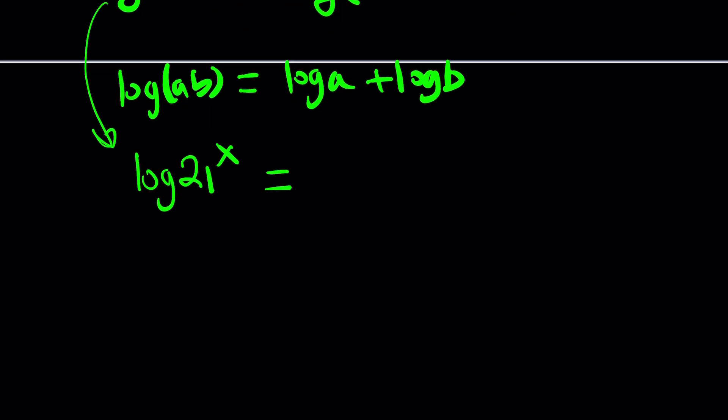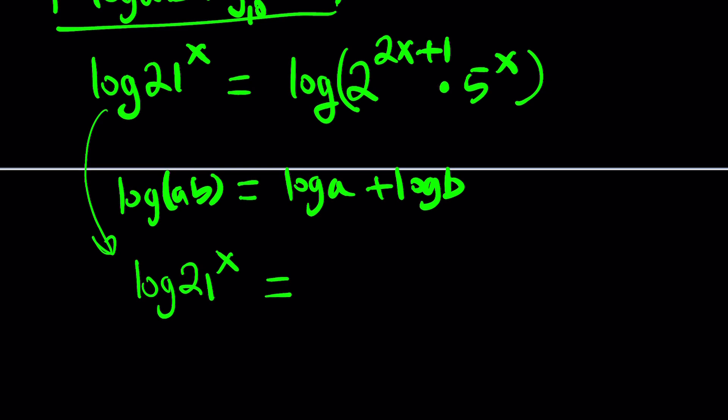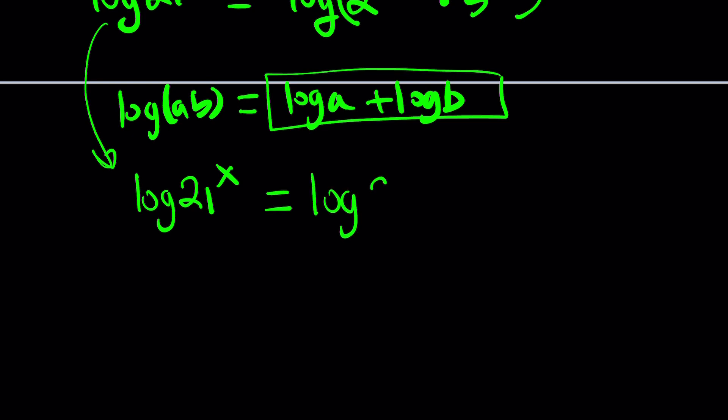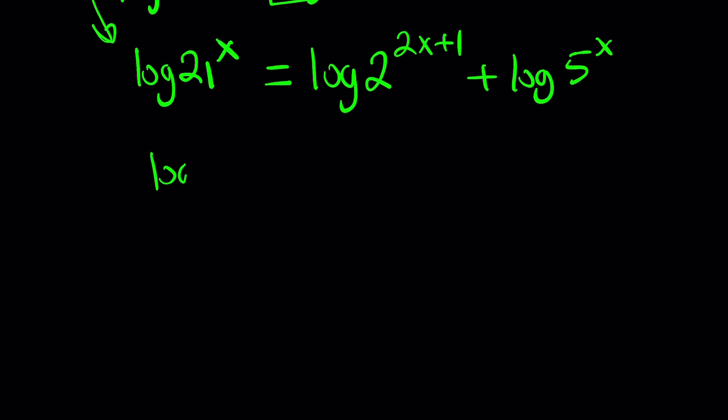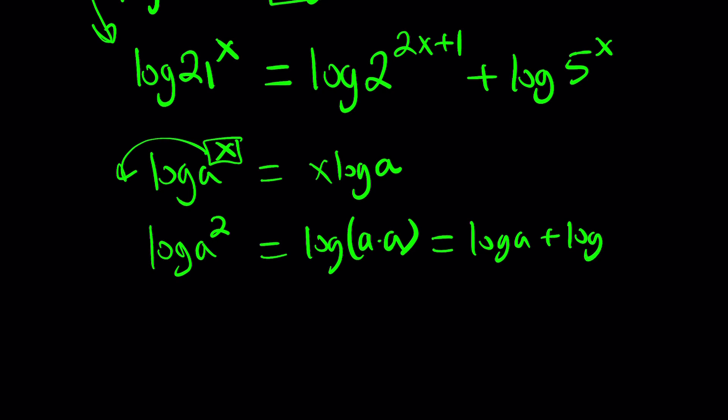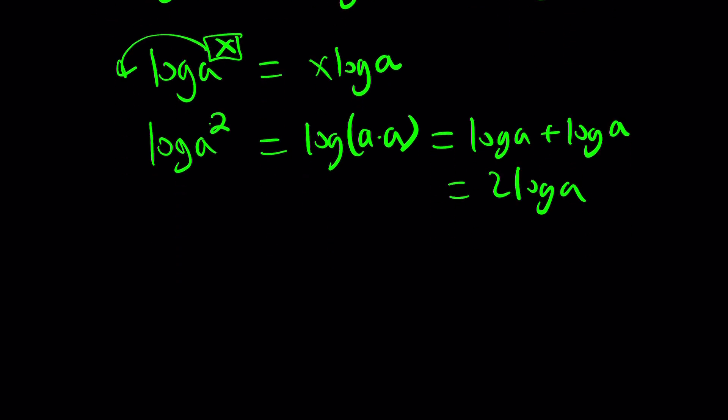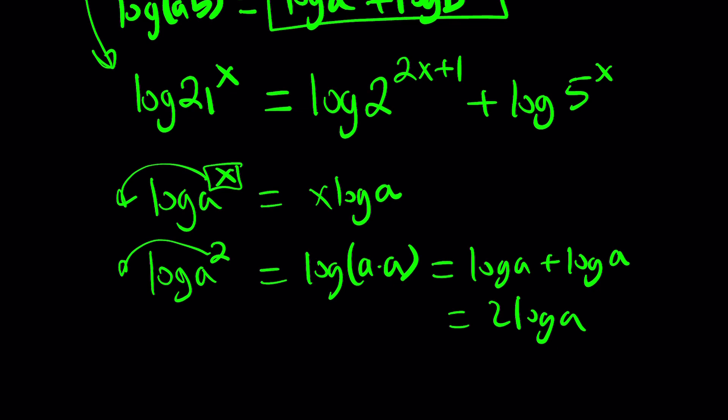So that's how we can deal with the products. Log 21 to the power X. And if you have the log of a product like here, we can split it up into log 2 to the power 2X plus 1 plus log 5 to the power X. The next property we're going to use is if you have log A to the power X, this X you can basically move to the front, X log A. If X is a positive integer, it's easy to prove. For general, we can use the properties of logarithms. But anyways, this is what we get from here.